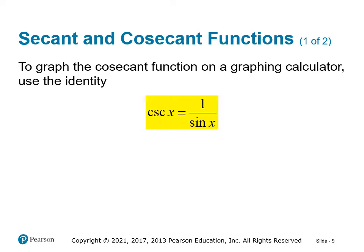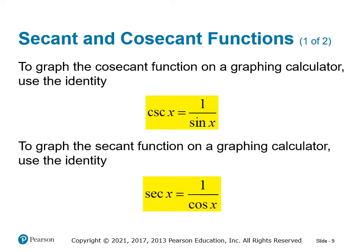When graphing the cosecant function on a graphing calculator, we use the identity cosecant = 1/sin(x). So if you were trying to graph cosecant of 2πx, you would enter 1 divided by sine of 2πx. Similarly, for the secant function, we use the reciprocal identity and enter 1 divided by cosine of that same angle or function value, and then we can see the graph.